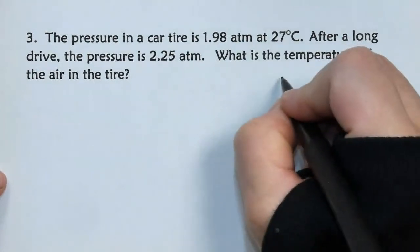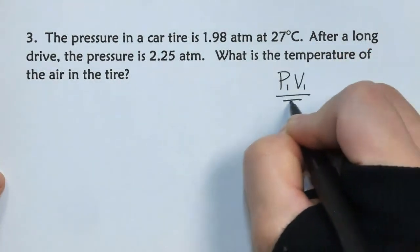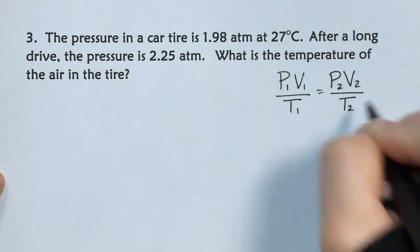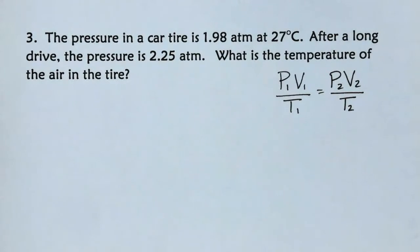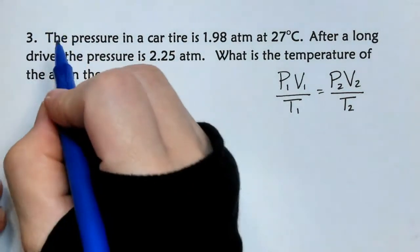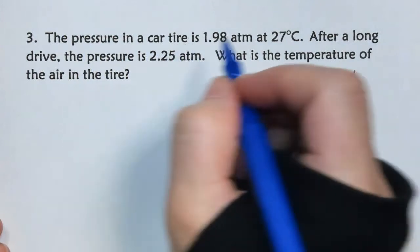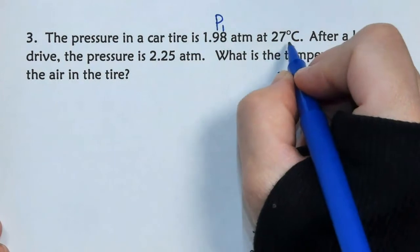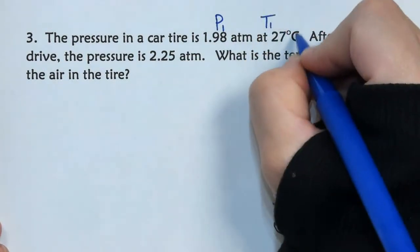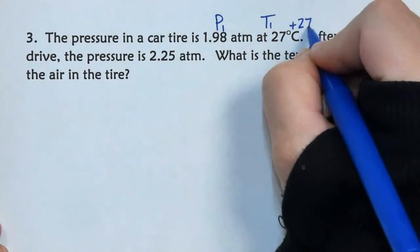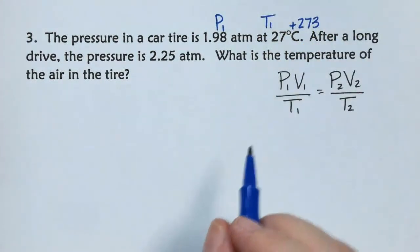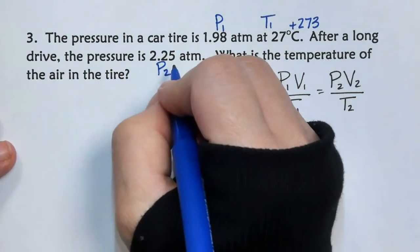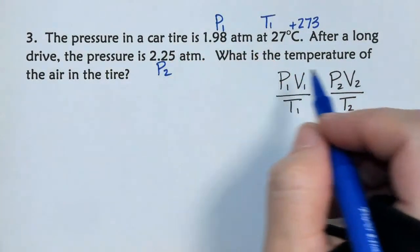Number 3, I'll start by writing my equation, P1 V1 over T1 equals P2 V2 over T2. So, now we'll go through and label our variables. The pressure in a car tire is 1.98 atmospheres, there's P1. At 27 degrees Celsius, there's T1, and Celsius means plus 273, in order to change it to Kelvin. After a long drive, the pressure is P2, 2.25 atmospheres. What is the temperature?